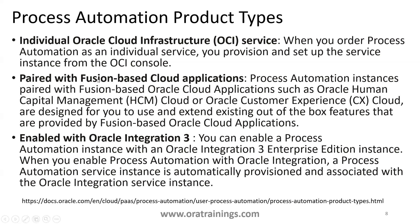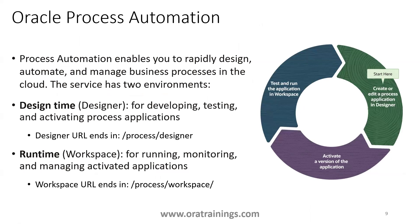The second option is paired with Fusion-based cloud applications — if a client has a Fusion ERP license, they can also subscribe to an OPA license. The first option is an individual Oracle Cloud Infrastructure standalone OPA license. This may not be as effective unless a client already has products from different vendors and just wants an approval mechanism. If they have Gen3, the best option is the last one; if they have Fusion ERP, they can go with the second option.